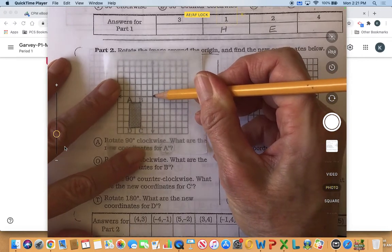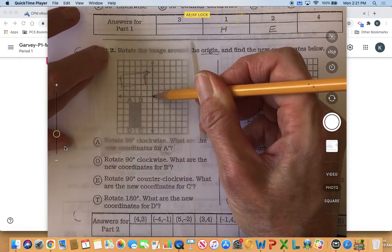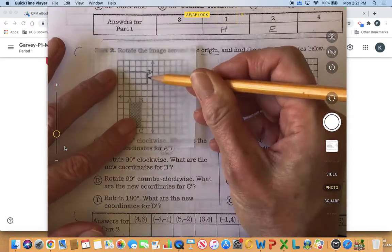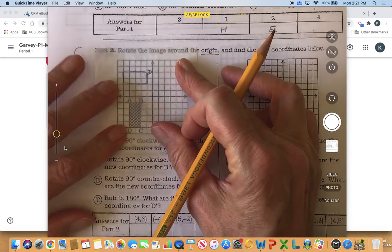Okay, so I'm putting my pencil in the origin and I'm starting to rotate, and I rotate until that little line is now going up and down, and I can see that I have rotated 90 degrees.